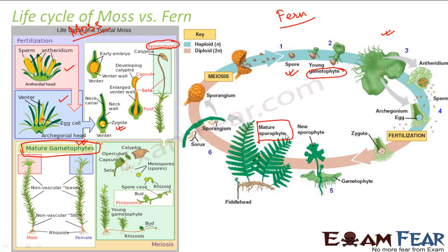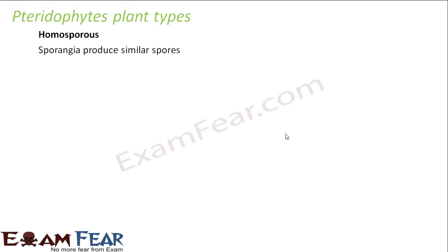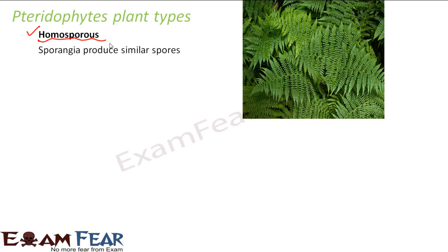Now we will look at pteridophyte types based on the type of spores they produce. They are divided into two types: homosporous and heterosporous. Homosporous means the sporangia produce similar spores — most pteridophytes, including ferns, are homosporous because all the spores produced by the sporophyte are similar.